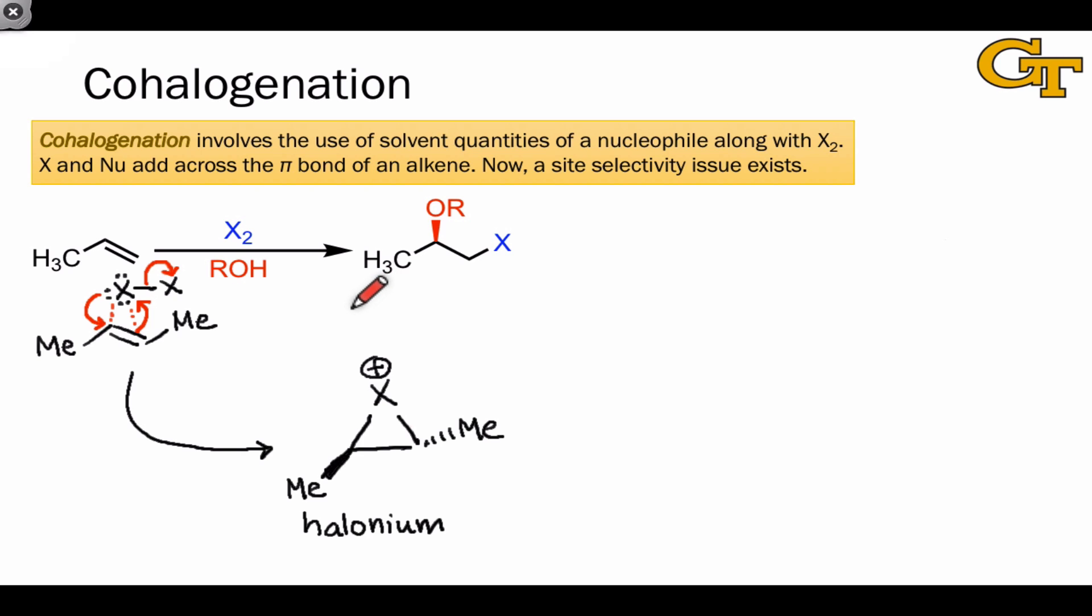Cl minus and Br minus are relatively weak nucleophiles, and we can take advantage of this by using solvent quantities of a nucleophile that takes the place of X minus in what's called co-halogenation. Often an alcohol, ROH, is used. The first step of the mechanism here is exactly the same.